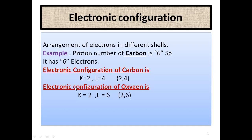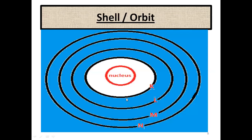Similarly, the electronic configuration of oxygen is: K is equal to 2, L is equal to 6, so the configuration is 2 and 6. Before starting the arrangement of electrons, let us first talk about shells.